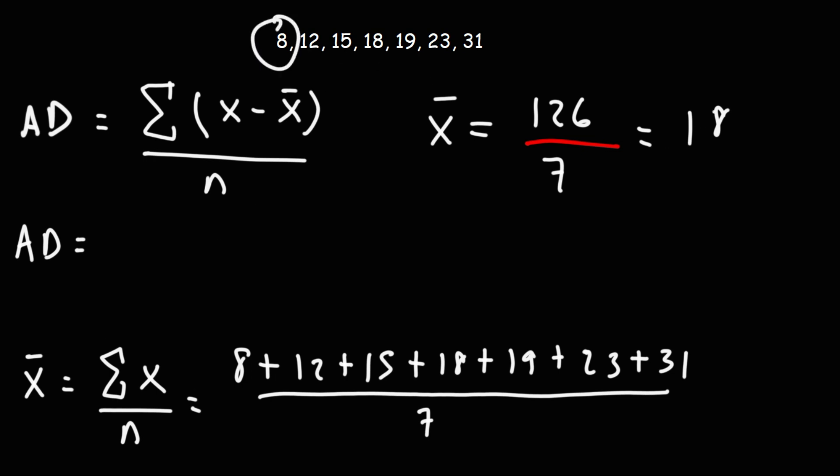Taking the first number and subtracting it by the mean, 8 minus 18 is negative 10. Notice that we don't have the absolute value symbol here. This is not the mean absolute deviation, so we need to incorporate the negative numbers. Next, 12 minus 18 is negative 6.